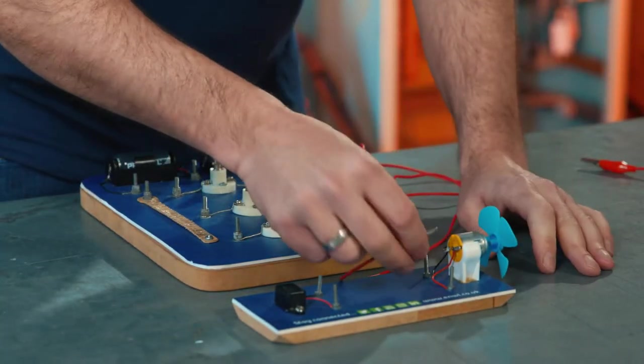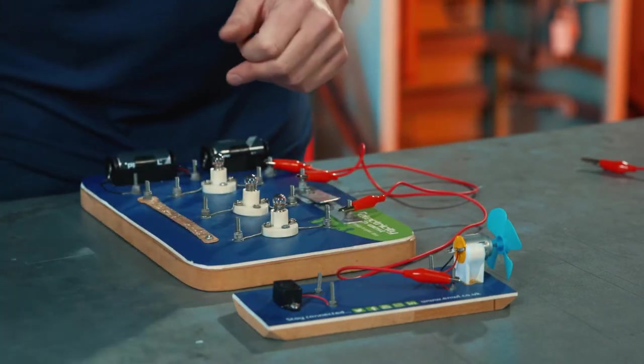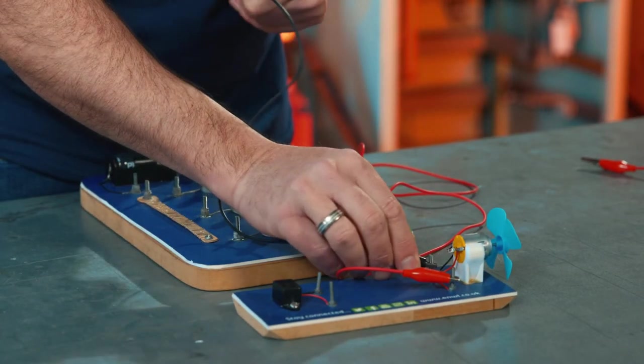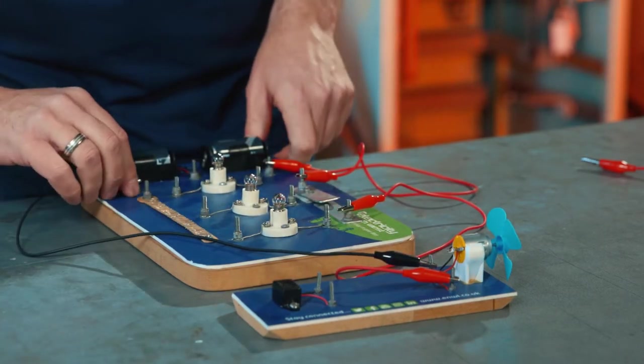From the switch, powering up the motor, going to the positive terminal. Then taking it from the negative terminal of the motor down to the negative terminal of the battery.